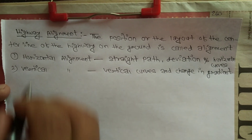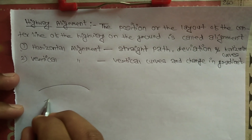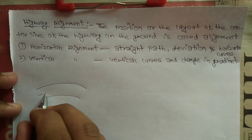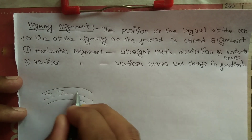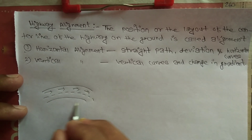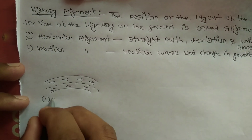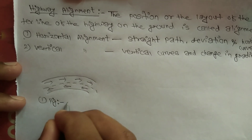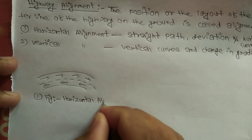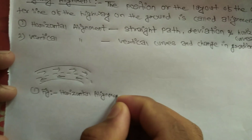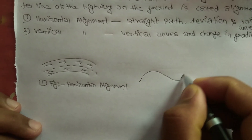So the figure of the horizontal alignment is like this. This is the center line, and this is the moving direction of the vehicles. So this is the horizontal alignment. And vertical alignment is nothing but — the figure is like this.